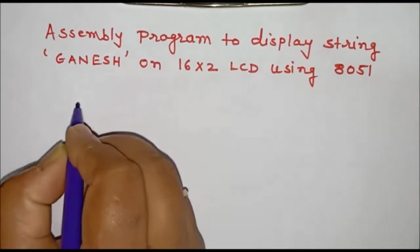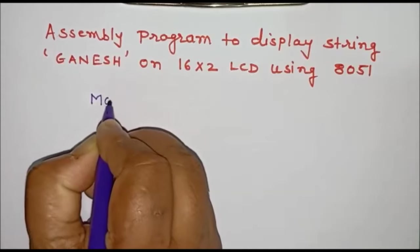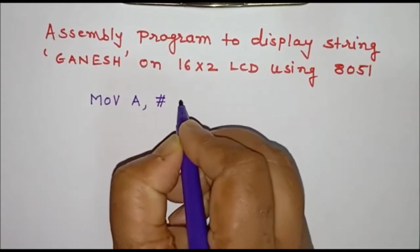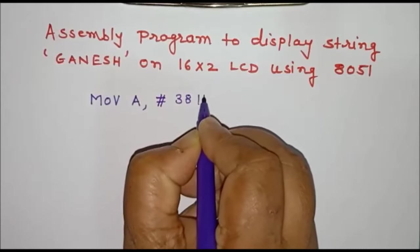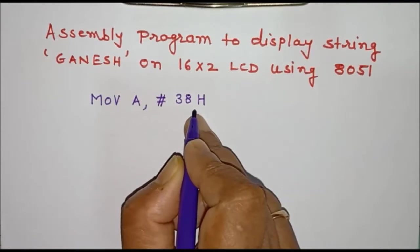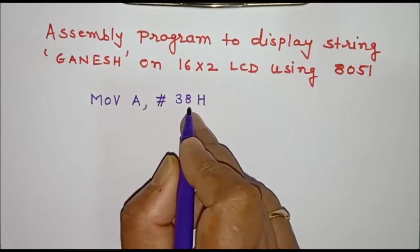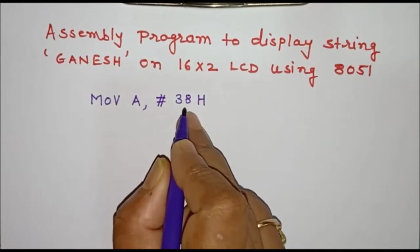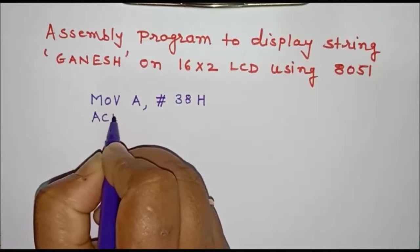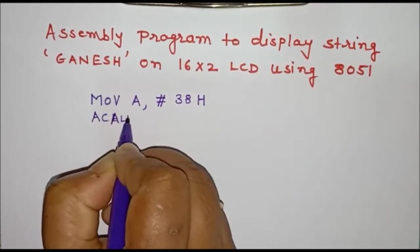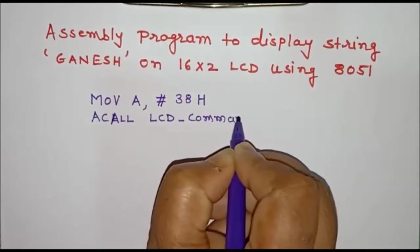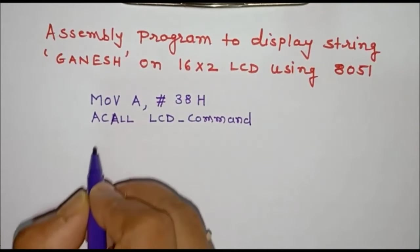We will start with the main program. First, we have to send commands to the LCD by writing to the LCD command register. The first command is 38H, which is stored in the accumulator. This command selects the 16 by 2 LCD with a 5 by 7 dot matrix pattern for character display. We then call the command subroutine named LCD_command.